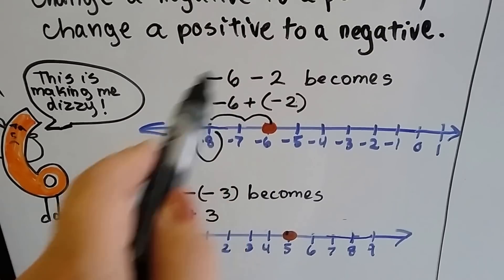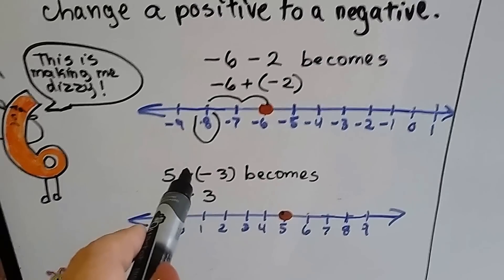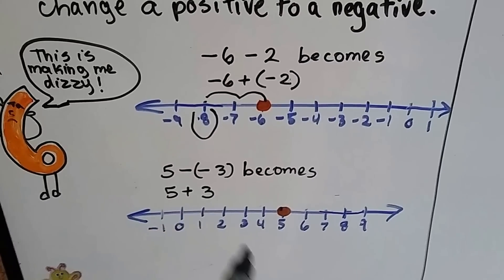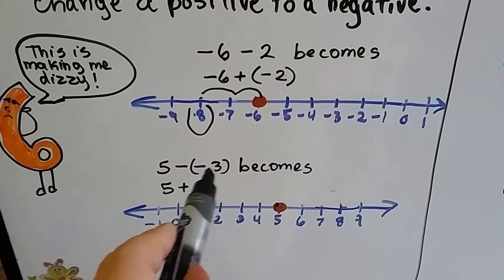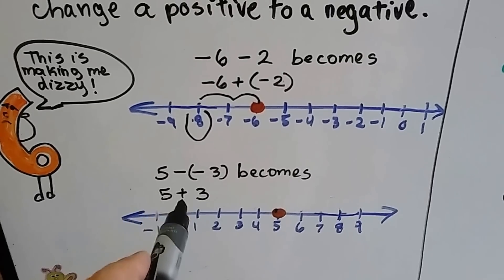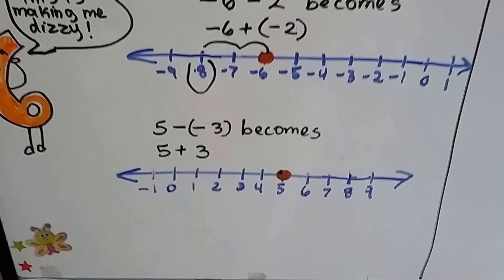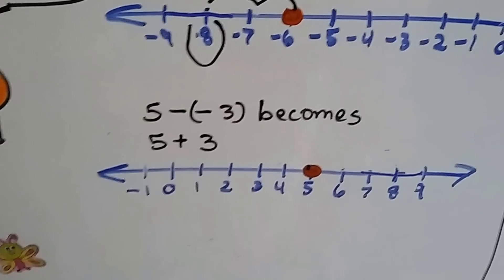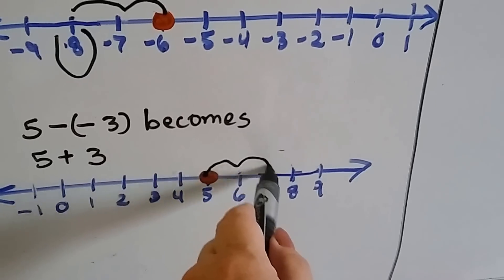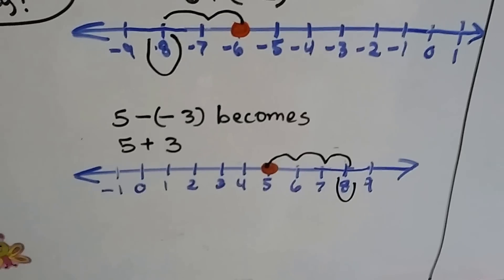That was starting with a negative 6. If we start with a positive 5 and we take away a negative 3 — now this is a negative 3, see? It's in parentheses. This is going to become a plus sign because we're adding the opposite, and the opposite of negative 3 is positive 3. We learned that in first grade: 5 plus 3. If you're at 5 and you want to add 3, we go 1, 2, 3. We're at positive 8.